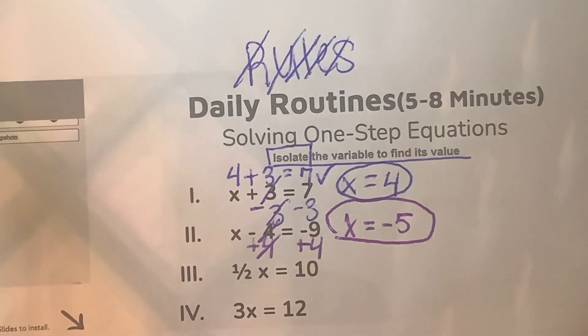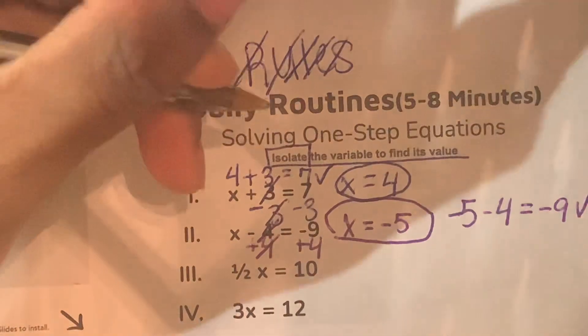x is equal to negative 5. We're going to circle this. We're going to double check. So now we're going to plug this into our original equation. So if x is equal to negative 5, negative 5 minus 4 is equal to negative 9. This is true.